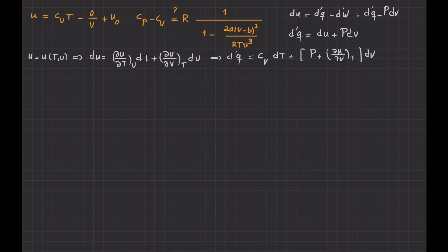This relation is completely generic — I haven't used the property of the Van der Waals gas yet. Now I want to write this relation for a process in which the pressure is kept constant. By definition of specific heat at constant pressure, D-prime of Q equals C_P dT.